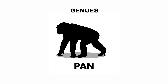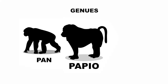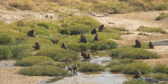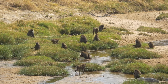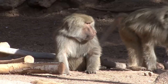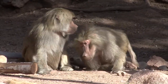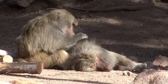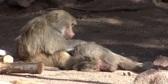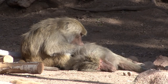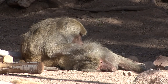Chimp genus is Pan, while baboon genus is Papio. A group of baboons is called a troop, and there are five species of baboons. Baboon group members spend a lot of their time grooming each other to clean out insects and dead skin, as can be seen in the picture here.